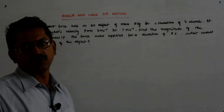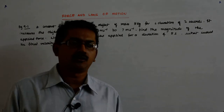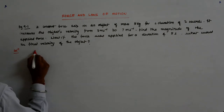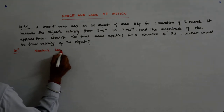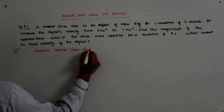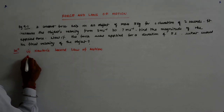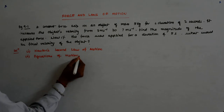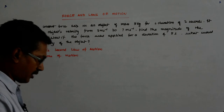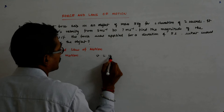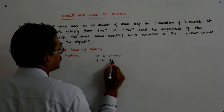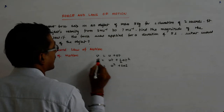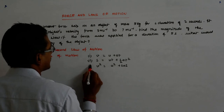While solving these problems, you should have a fair idea of Newton's second law of motion and the equations of motion. The equations of motion are: v = u + at, s = ut + ½at², and v² = u² + 2as. This is the first, this is the second, and this is the third.